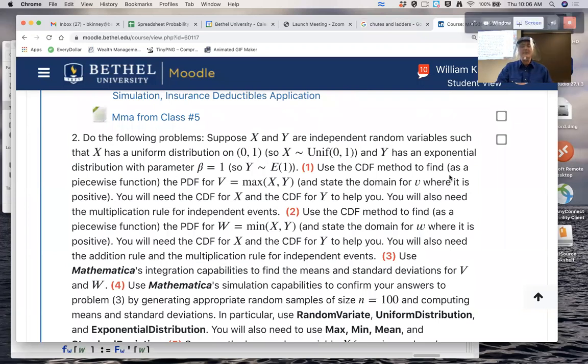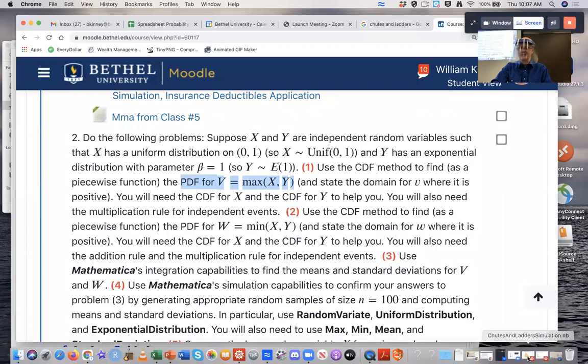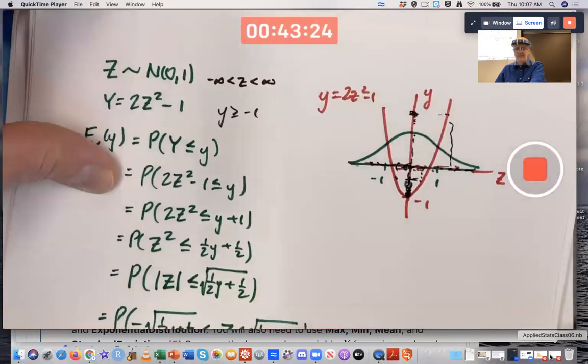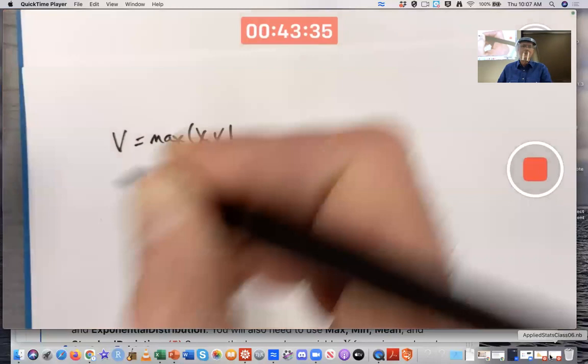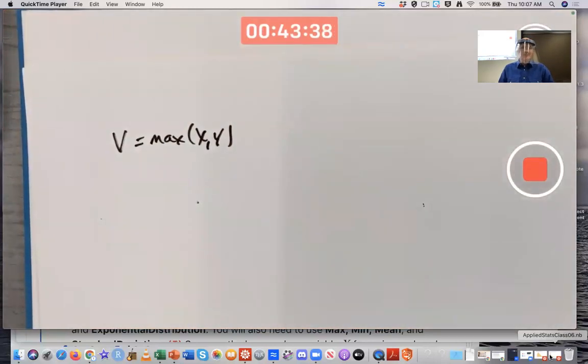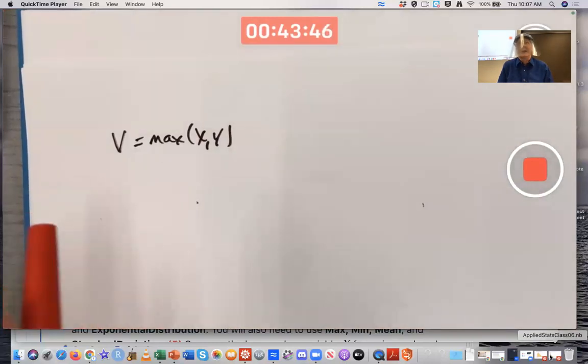Use the CDF method to find the PDF for the maximum of X and Y. It's tricky, it's piecewise, got to think carefully. Let's look by hand first. The derivative formula from chapter 4 would not work here, would not be helpful.